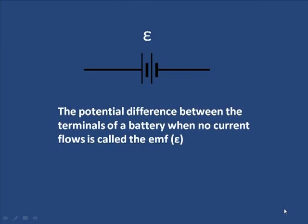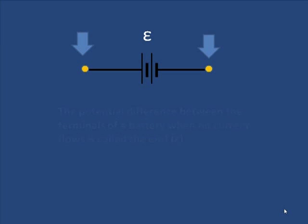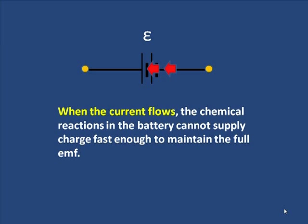The terminal voltage is equal to the EMF of the battery minus the voltage drop. The potential difference between the terminals of a battery when no current flows is called the EMF. That EMF exists because chemical reactions in the battery cause a separation of charge, and when you have a separation of charge, you have a potential difference called the EMF. But when current flows, there's a dip in that EMF — because the chemical reactions in the battery cannot supply charge fast enough to the other terminal to maintain the full EMF.